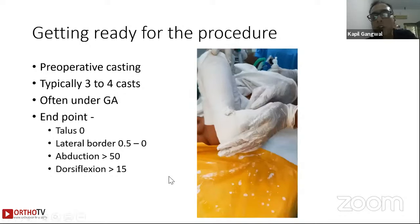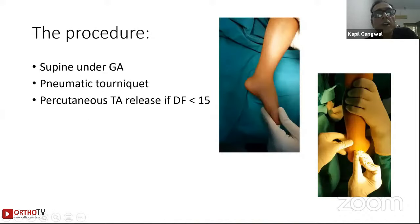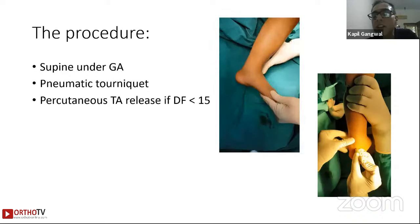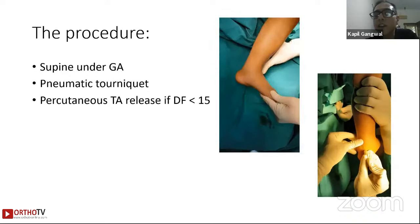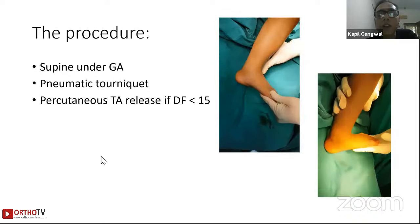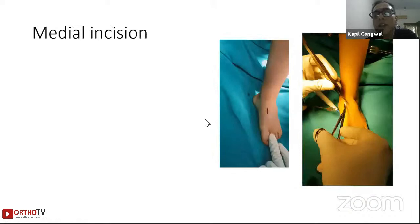The procedure is done under general anesthesia with the child placed supine on the operating table using a pneumatic tourniquet. If ankle dorsiflexion is slightly restricted, I add a percutaneous tendo-Achilles release to get additional dorsiflexion, which will help functioning of the tendon transfer. The incision is anteromedial, a small incision right over where the tendon lies.